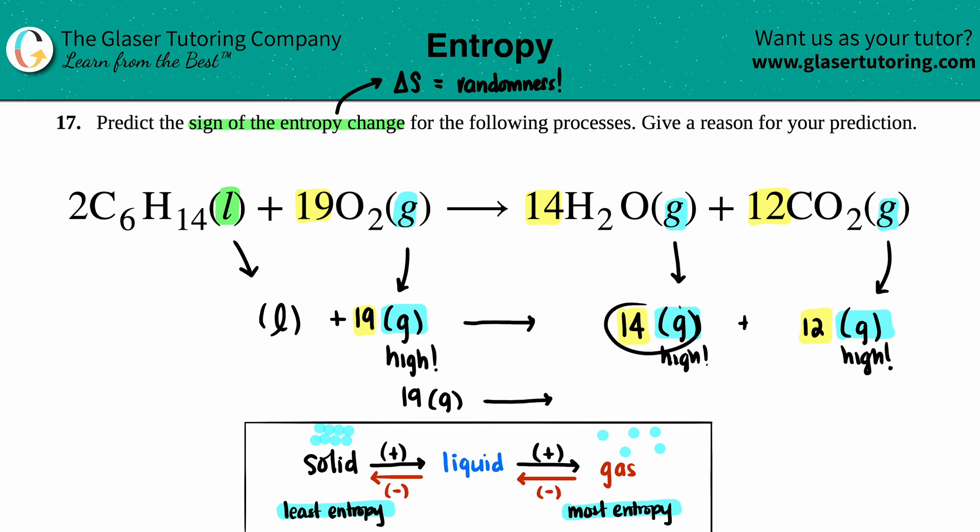going to basically 14 plus 12, so that's 26 gases. Am I going to something that is more random or less random? The more gas that you got, the more bouncing all over the place, the more chaos, right? It's kind of like, you know, a gas is kind of like a kindergartner, right? And you as